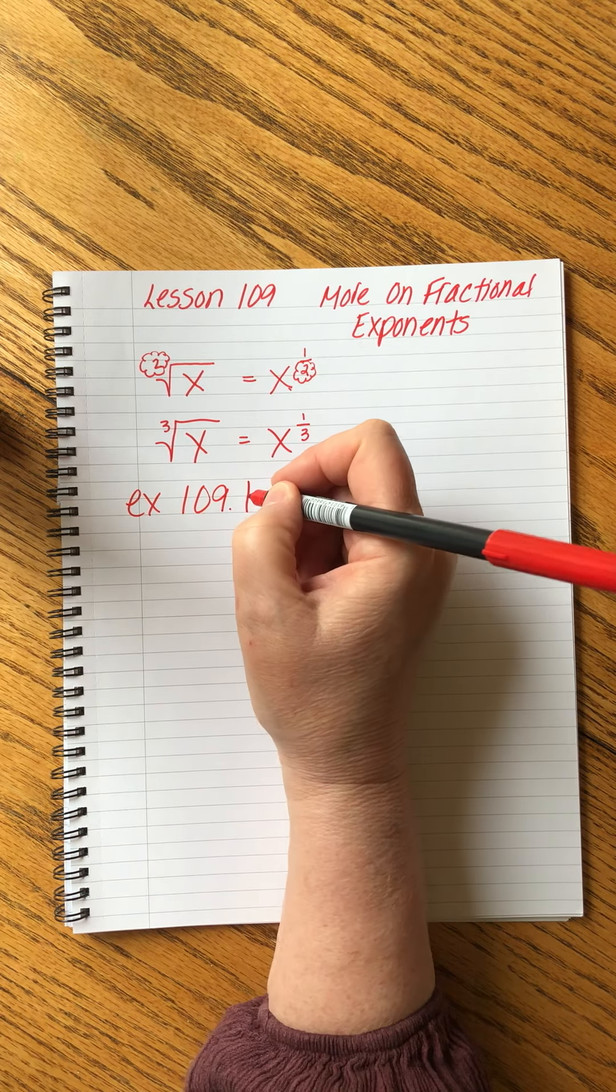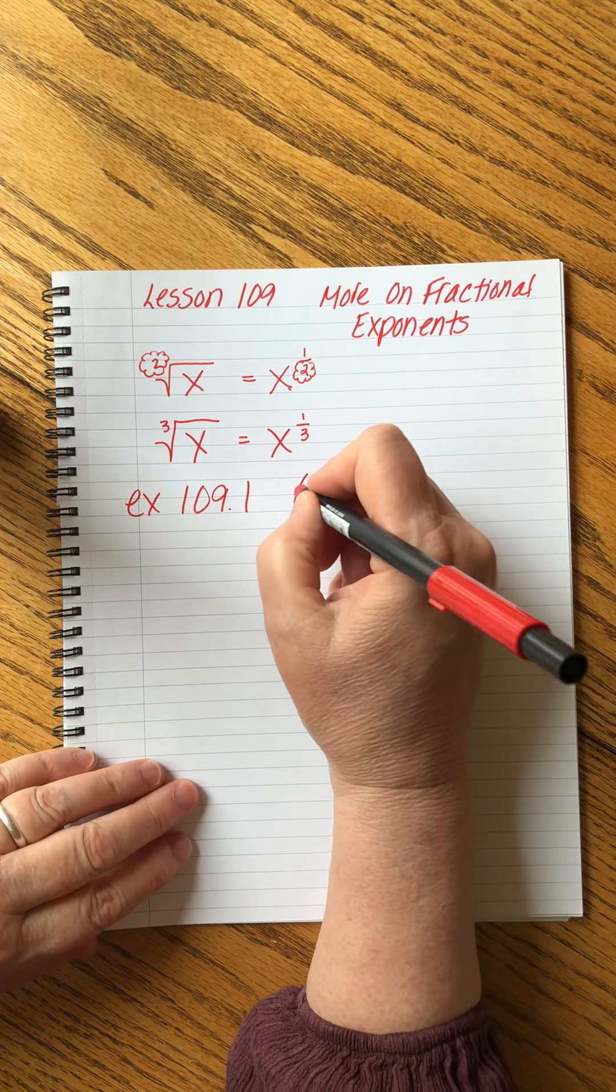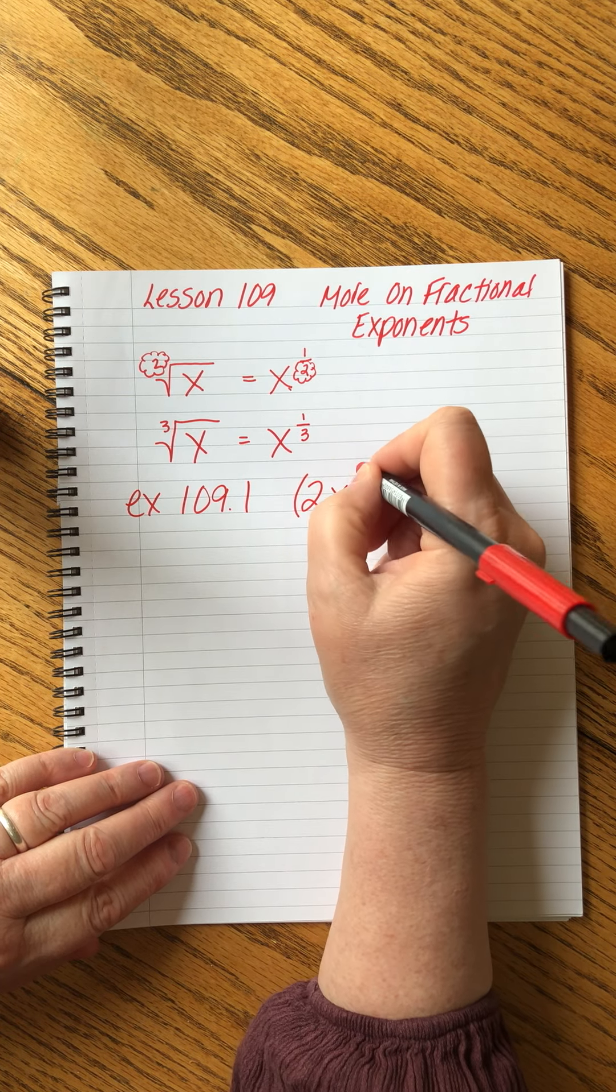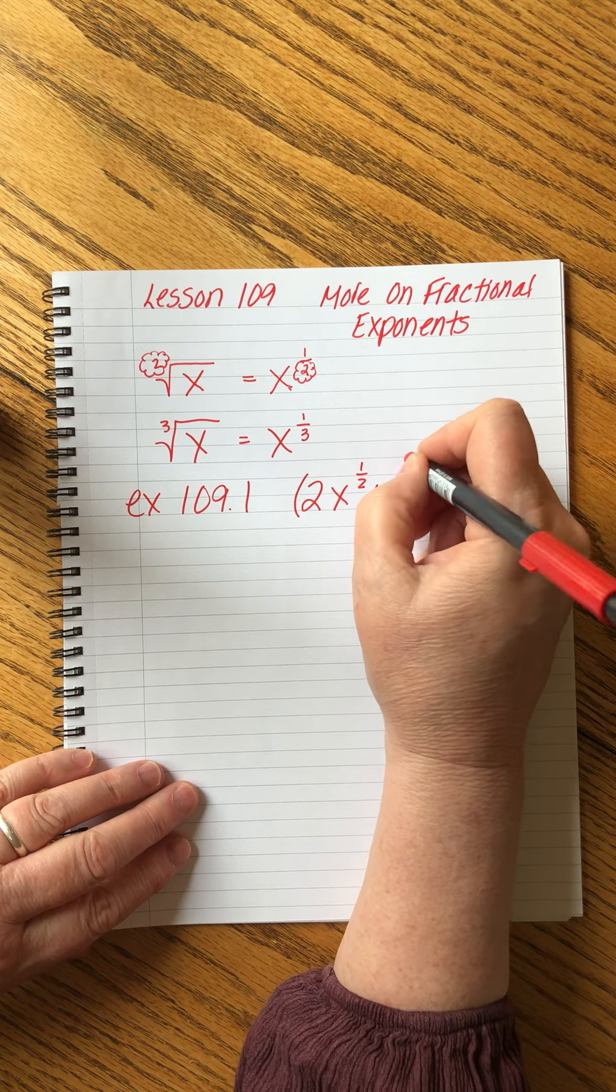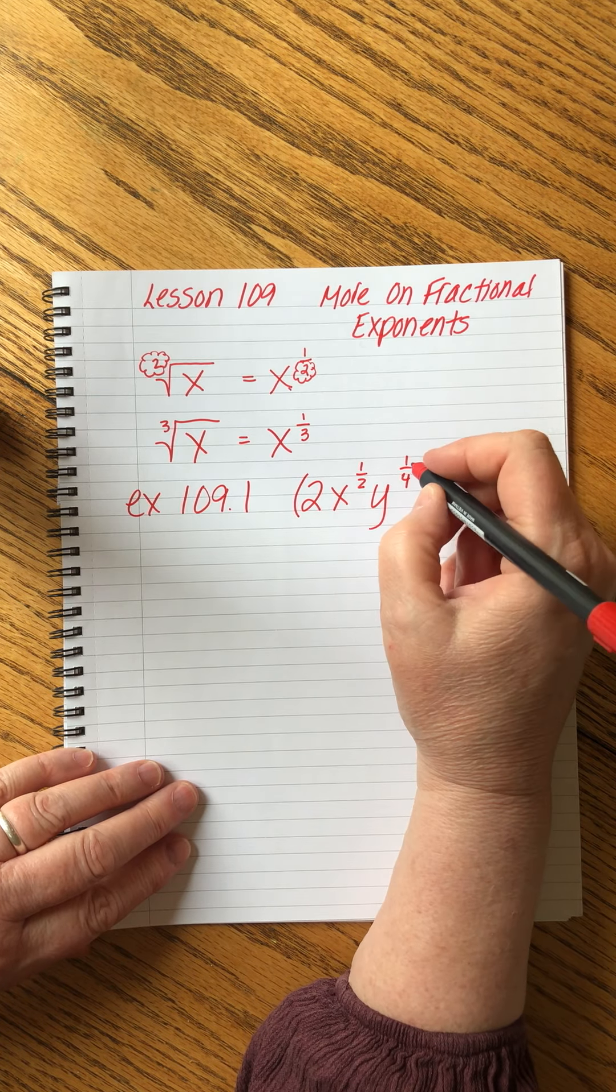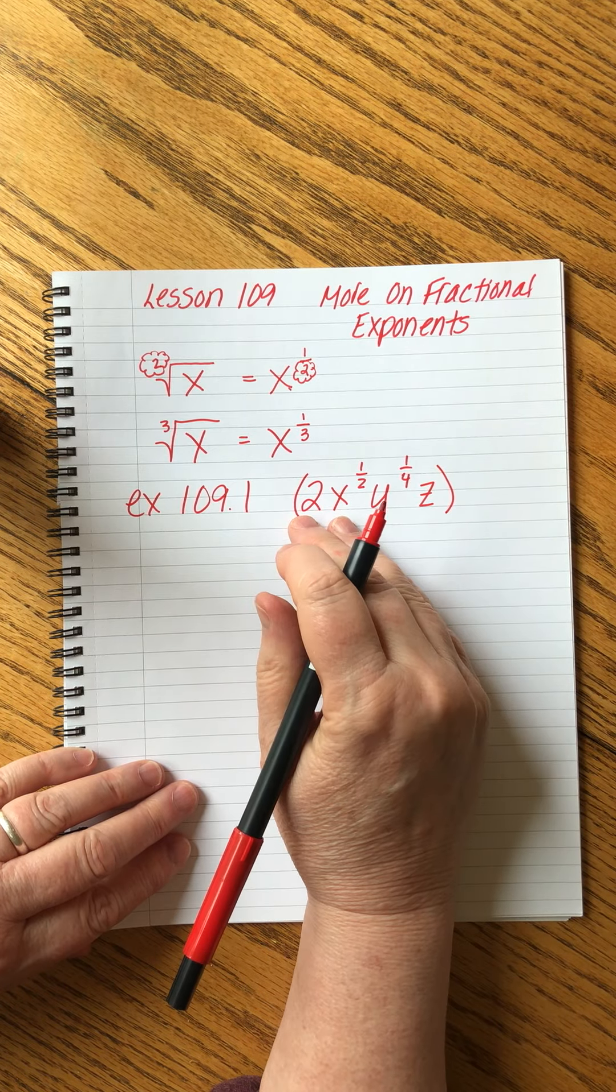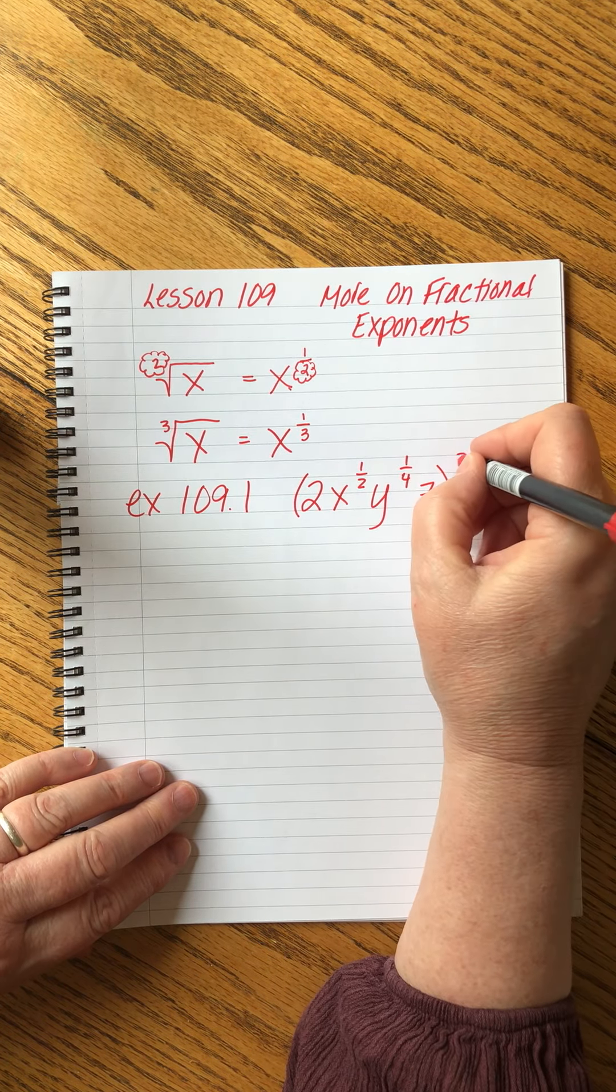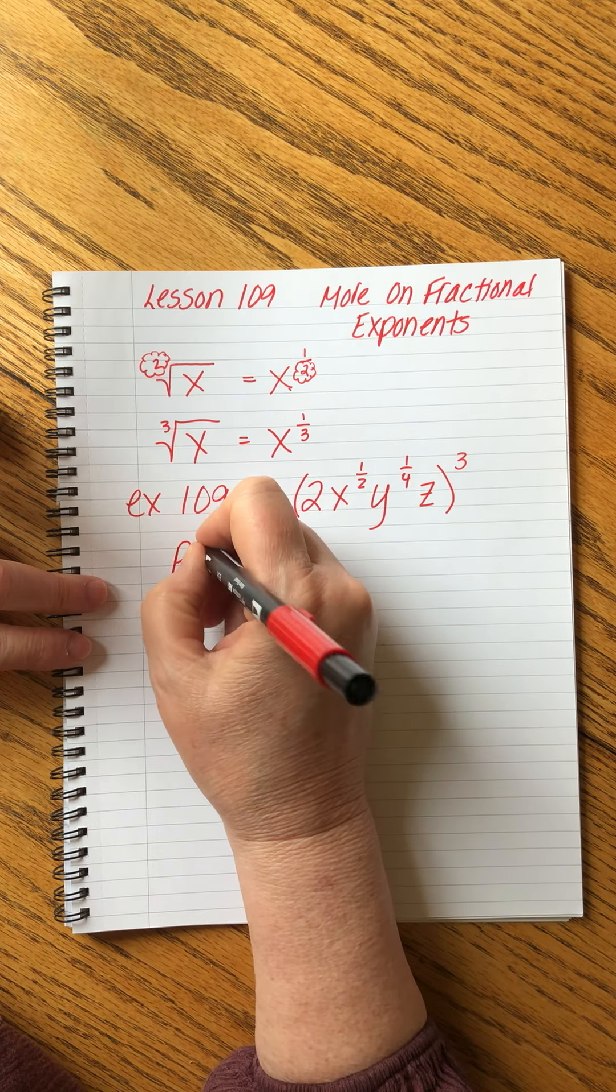So we're going to talk about that. Let's just review the basics in the first example. There are three examples in this lesson. 109.1 is what we have done in the past: 2x to the one-half, y to the one-fourth, z. Remember my z's have slashies. And then we're raising this whole mega beast to the third power.